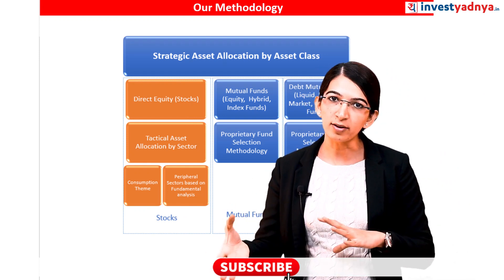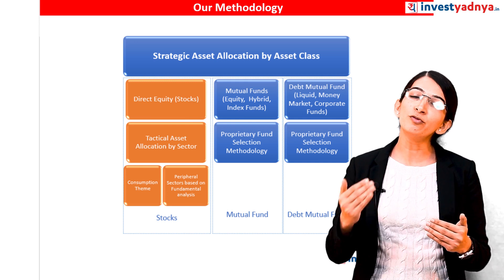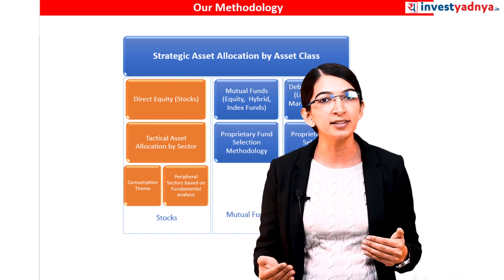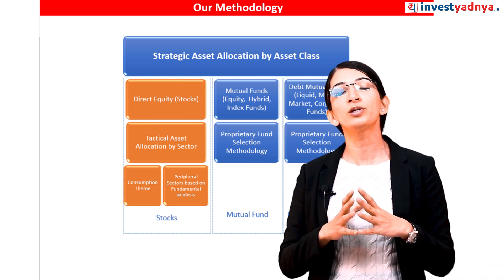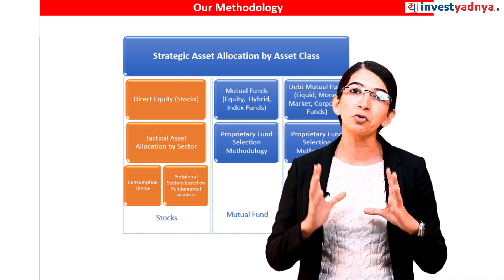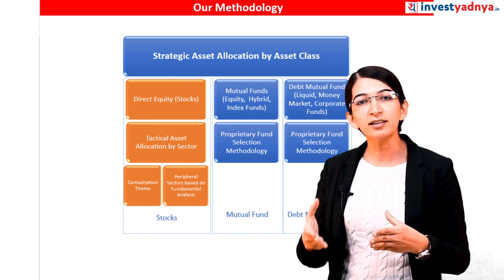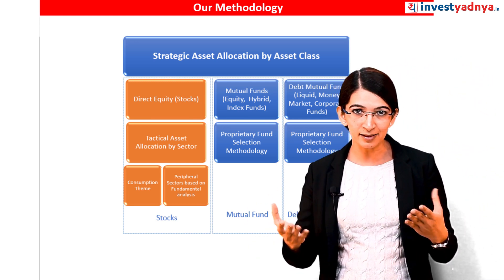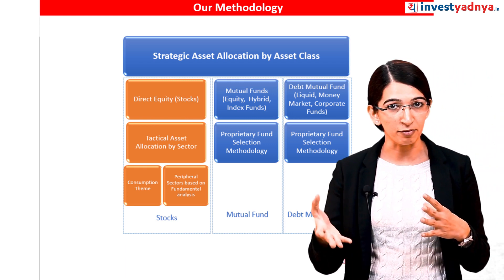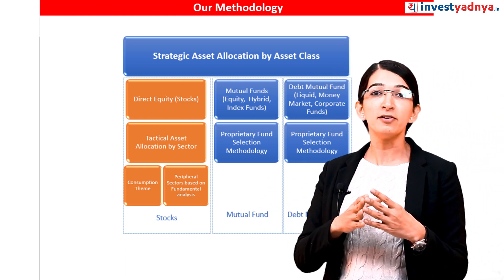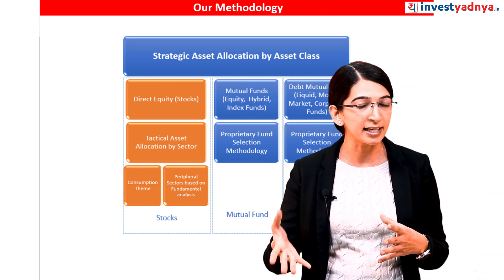Taking a look at the stock sub-portfolio within the model portfolio, we moved on to the next step of tactical allocation by sectors. The main theme we looked at while constructing the stocks portfolio is the consumption theme. We also looked at a few peripheral sectors where companies have put in a lot of efforts in making their brands visible to retail investors, for example, cement and healthcare.